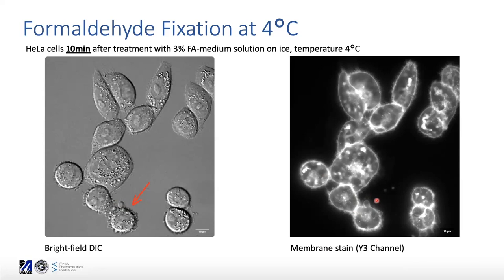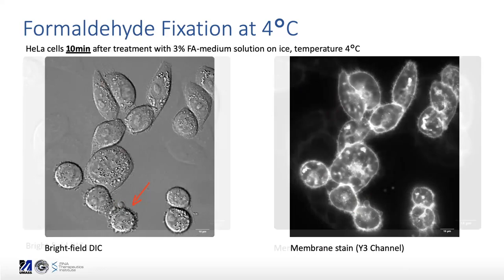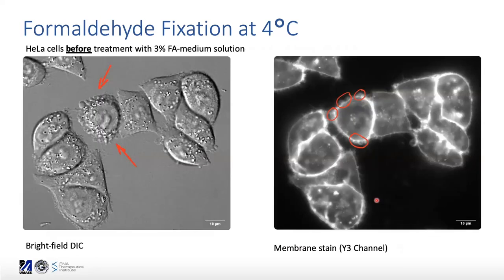The question here is whether these blebs are really caused by the fixation in this specific experiment, or whether they were actually caused by apoptosis before fixation. This image from the same experiment shows cells before application of formaldehyde, and what is highlighted with arrows is actually a dying cell. You can see it also forms very tiny blebs, which is a very common thing for dying cells to do.